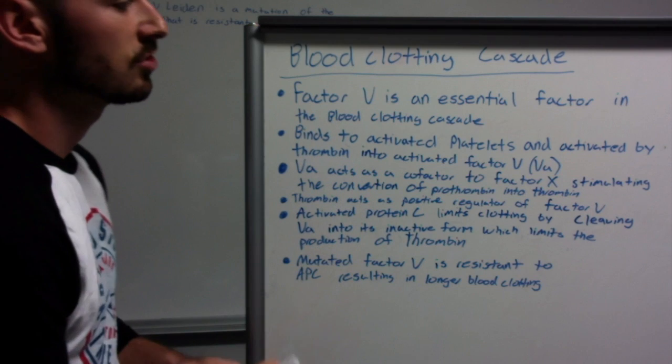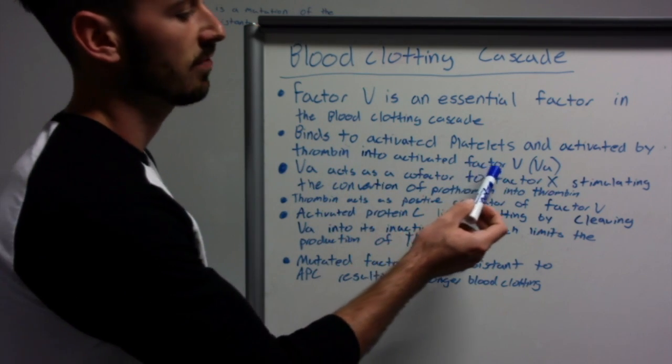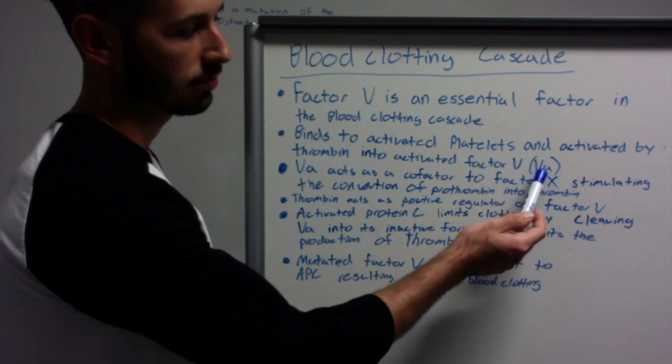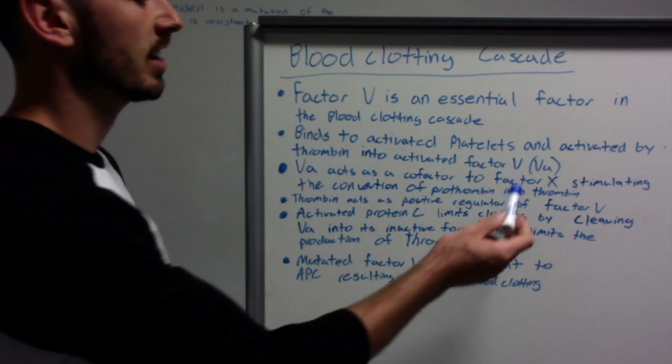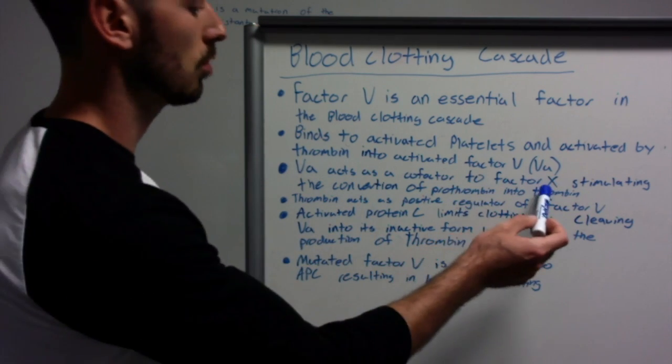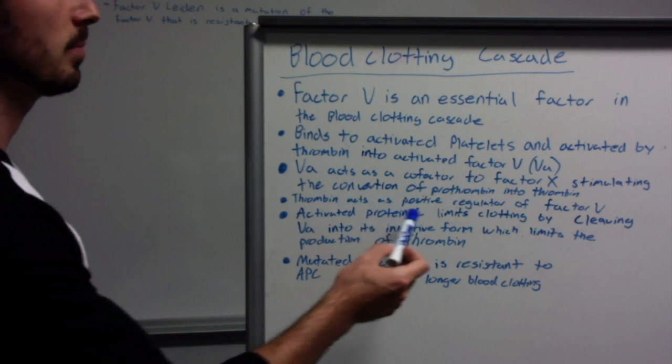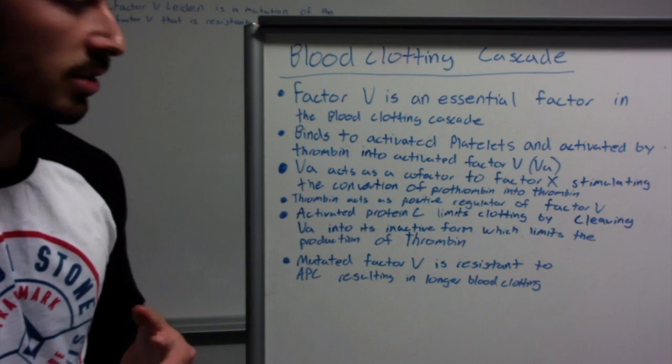Factor V binds to platelets and is activated by thrombin into its activated Factor V form, which is VA. VA acts as a cofactor to Factor X, stimulating the conversion of prothrombin to thrombin. Thrombin acts as a positive regulator of Factor V, which creates a positive feedback loop.